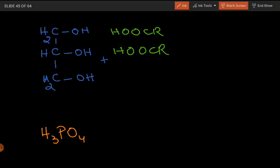Looking at the open structure of phosphoric acid: P double bond O, with three OH groups. These are the three main constituents of the phospholipid. Sometimes there is also a nitrogenous base as a fourth component.